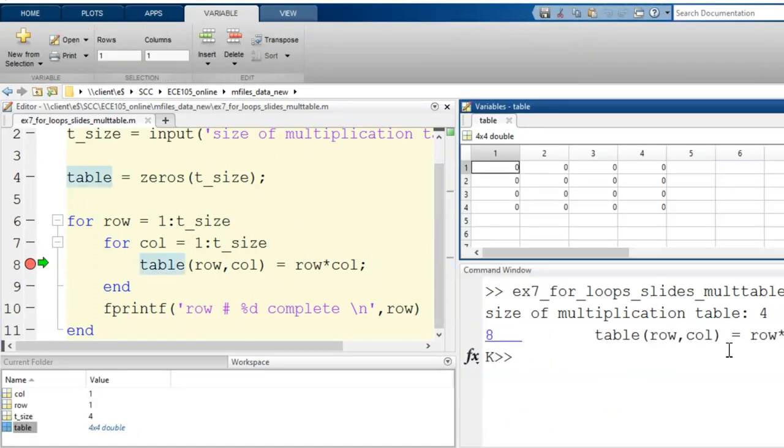Then the code is processed up to the breakpoint. In the workspace, I can see what the current values of the variables are, just like in our tracking tables. In the variable editor, I have pulled up the variable name table. Currently, it is a 4x4 zeros matrix.